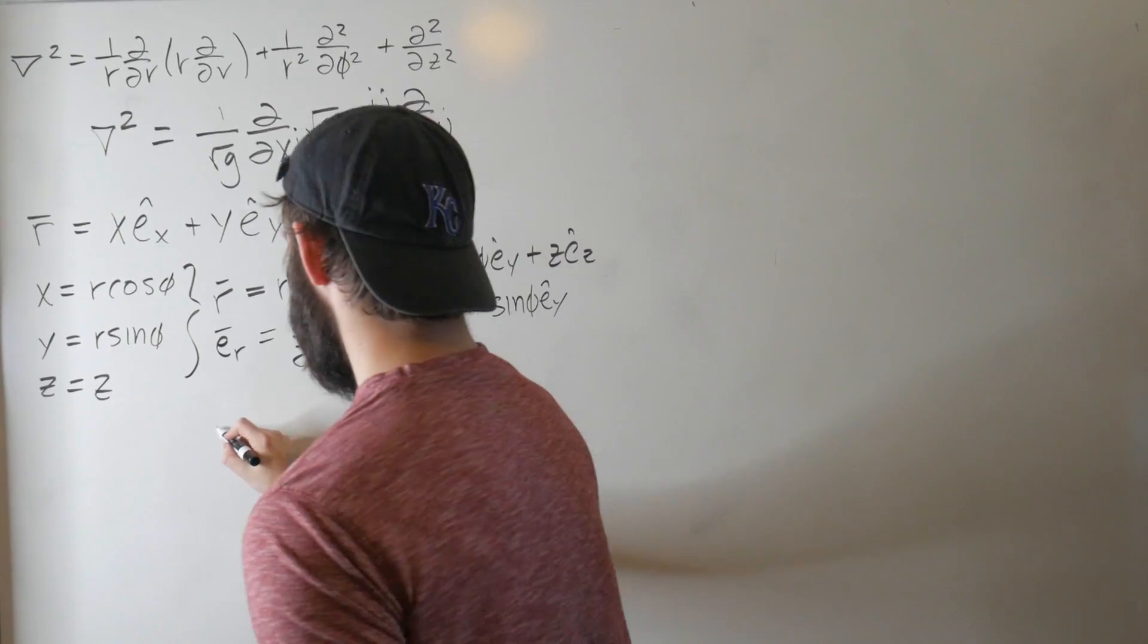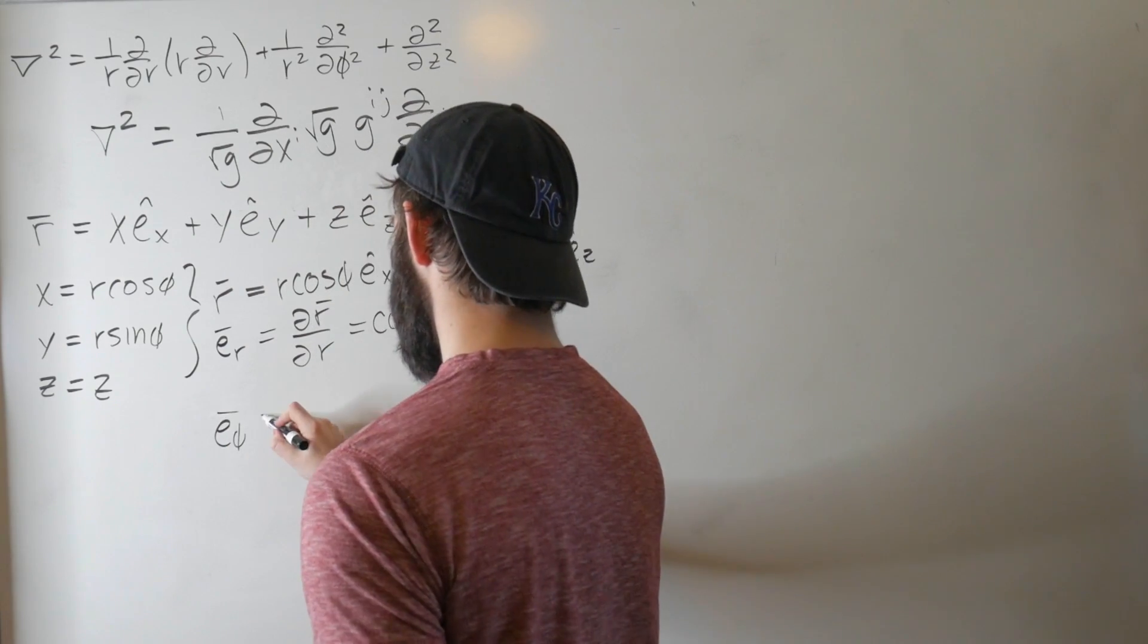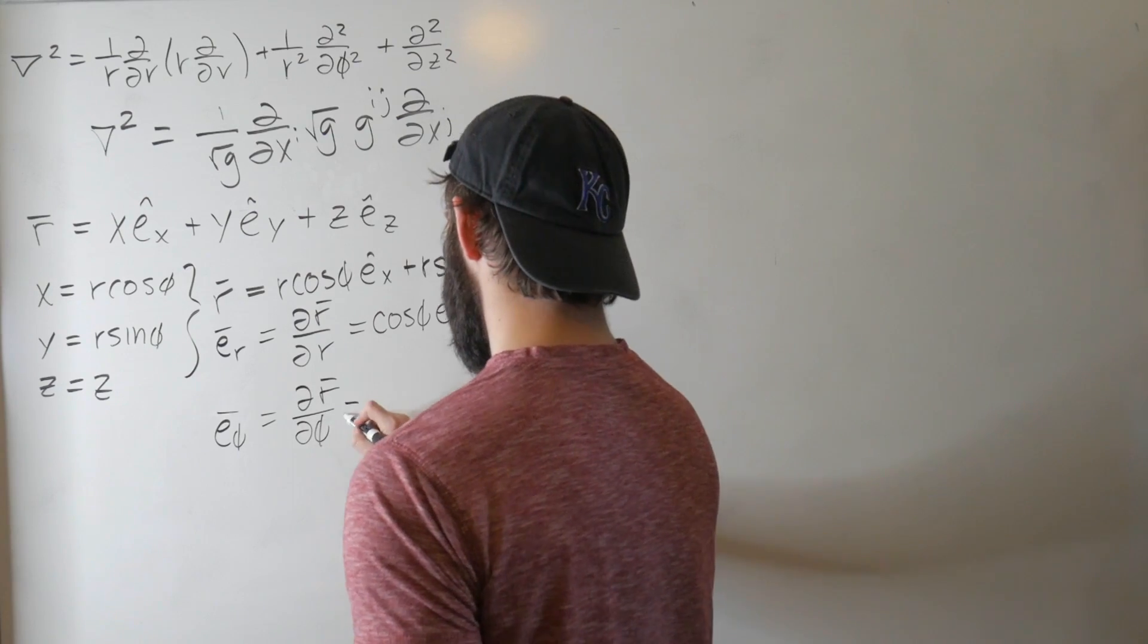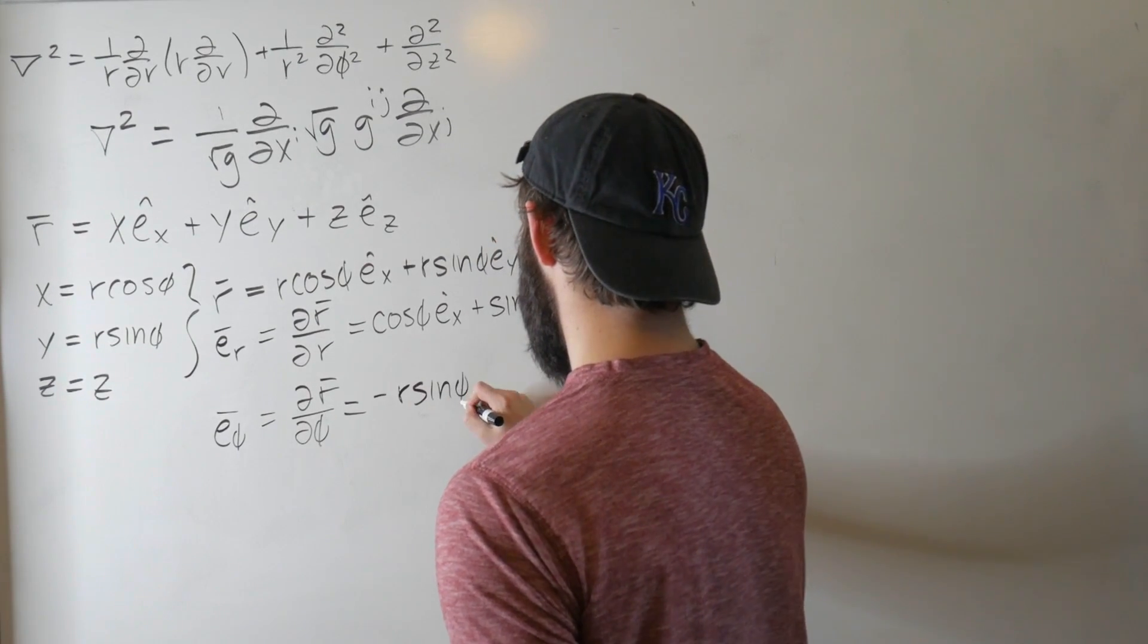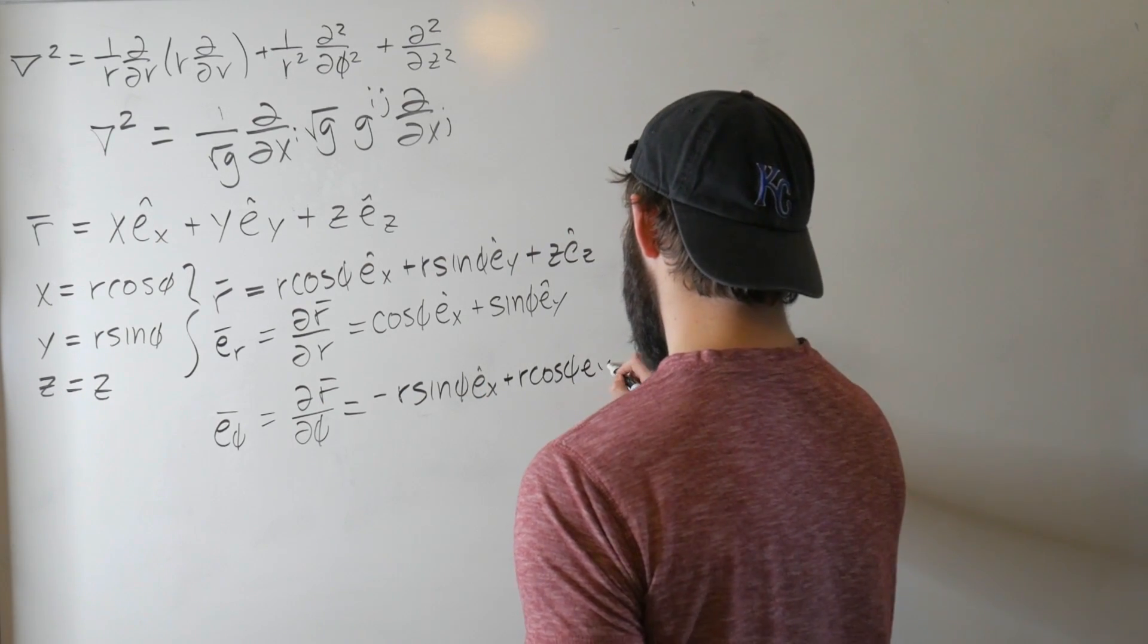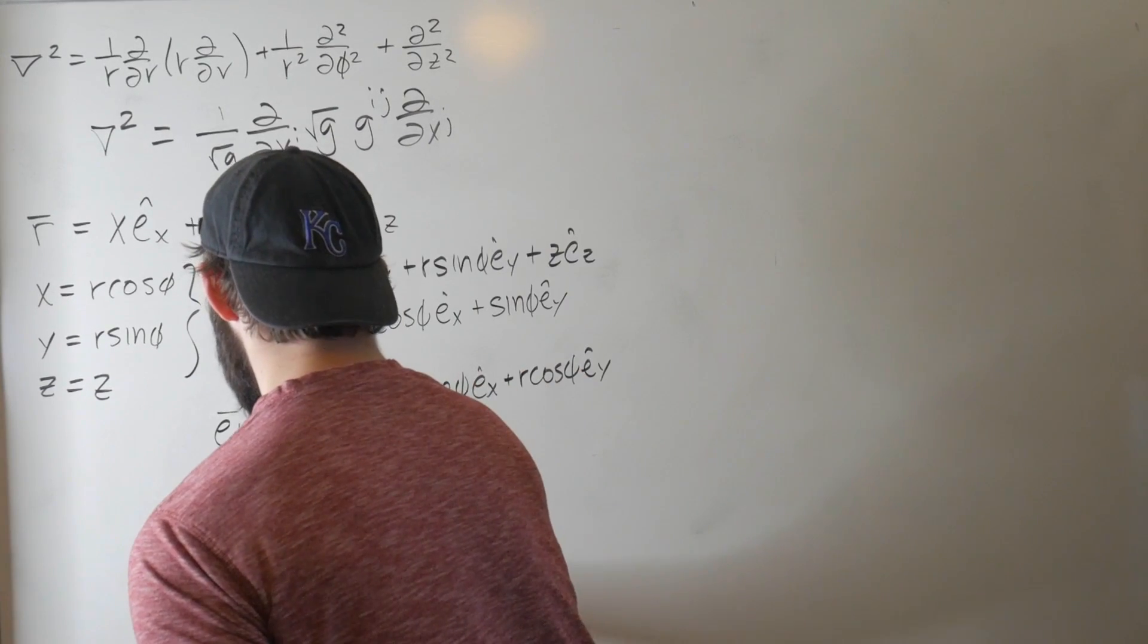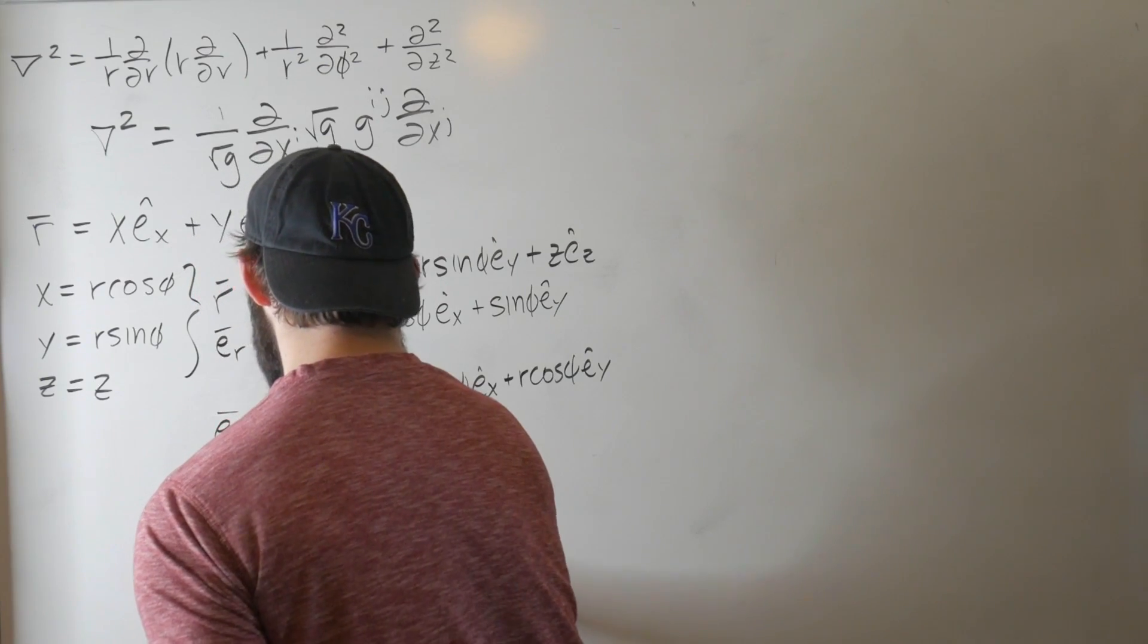Same thing goes for e_phi, and this is not hat, it's not necessarily a unit vector. dr/dphi equals minus r sine phi e_x plus r cosine phi e_y. And the last one is e_z, which also does not change. And we are making good progress here, so this is just e_z.